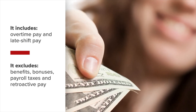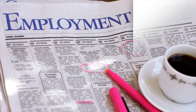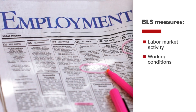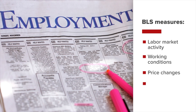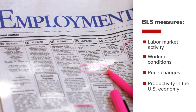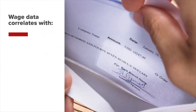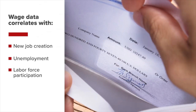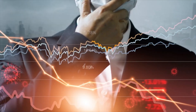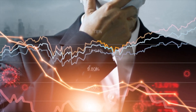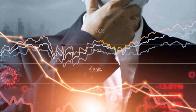The Bureau compiles the data by surveying businesses. The BLS measures labour market activity, working conditions, price changes and productivity in the US economy to support public and private sector decision making. Wage data is often highly correlated with employment data such as new job creation, unemployment and labour force participation. For example, during the global financial crisis from 2007 to 2009, wage growth slowed alongside increasing unemployment rates and economic contraction.